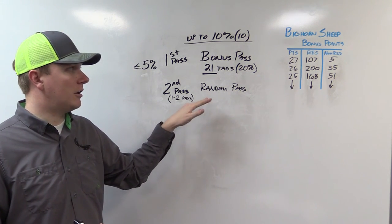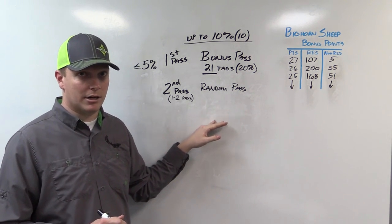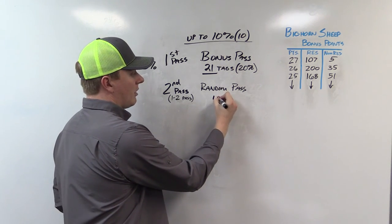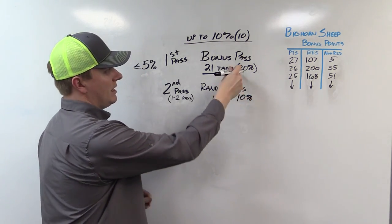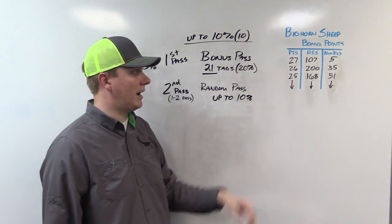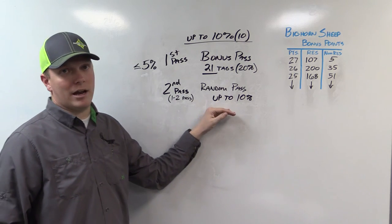This is where non-residents are going to draw the tags this year if at all. So we can get our up to 10% pending we didn't take any of our percentage in the bonus pass with these five guys, and we're going to get it in the random pass.